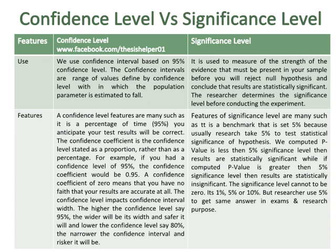A confidence coefficient of 0 means that you have no faith that your results are accurate at all. The confidence level impacts the confidence interval width. The higher the confidence level, say 95%, the wider will be its width and the safer it will be. The lower the confidence level, say 80%, the narrower the confidence interval and the riskier it will be.